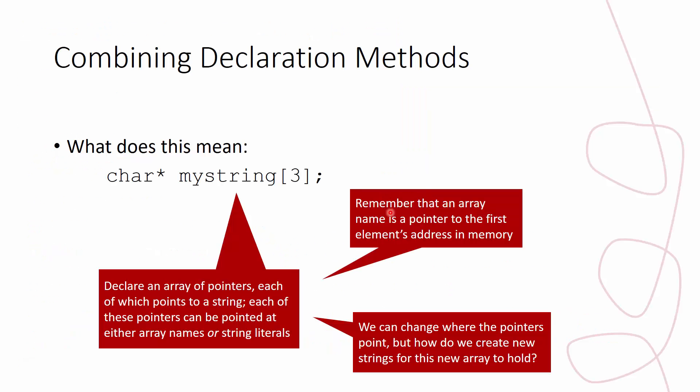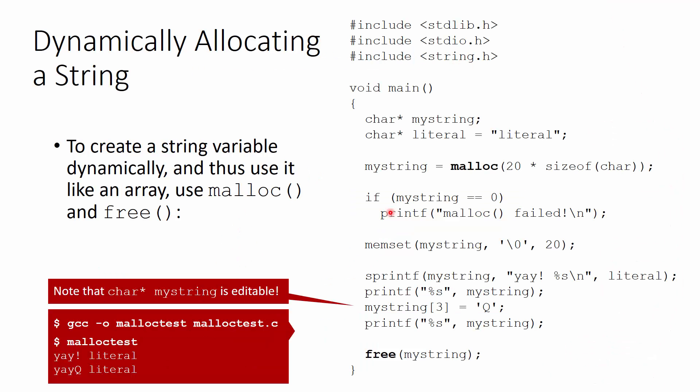Looking back at the combined declaration method slide: we can change where the pointers point. But how do we create new strings for this array to hold? We do that with malloc (memory allocate) and free, which frees that memory. Here is a sample program to dynamically allocate a string.